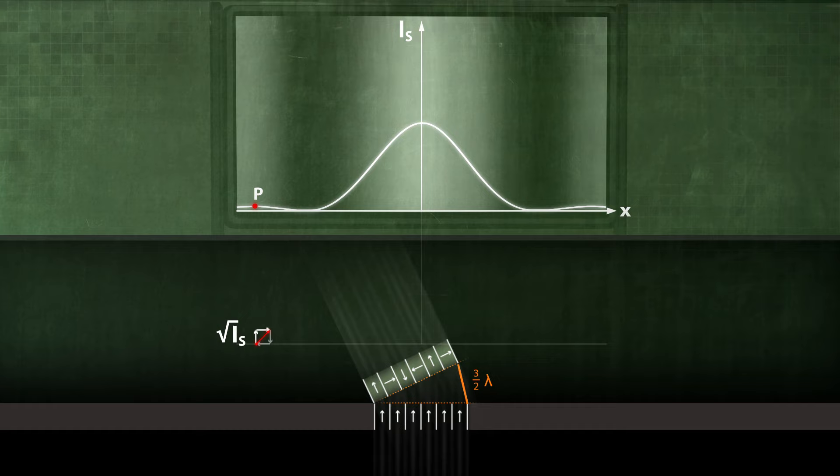The first secondary maximum is reached once the path difference has increased by a further half wavelength to delta equals 3 half times lambda.